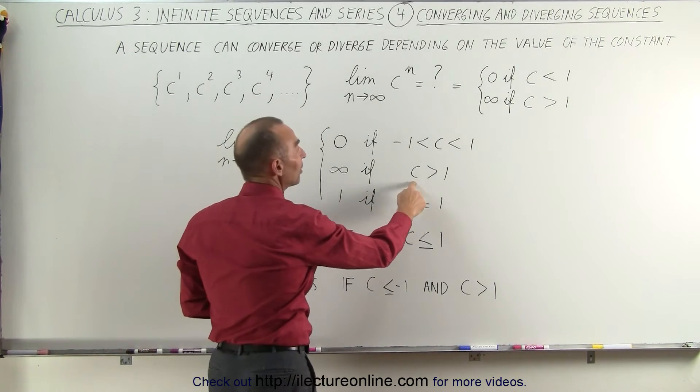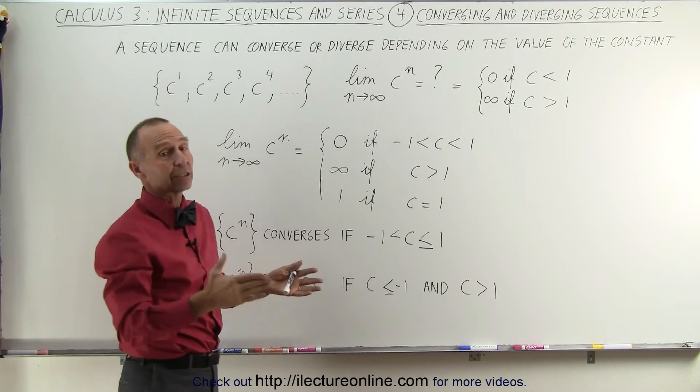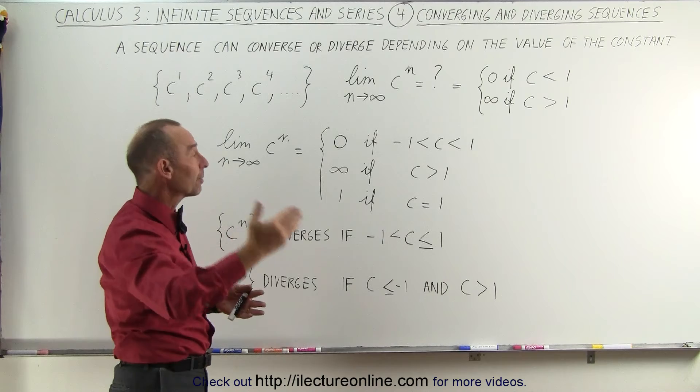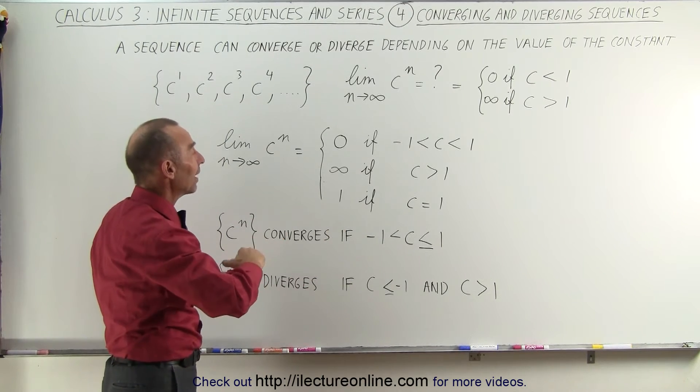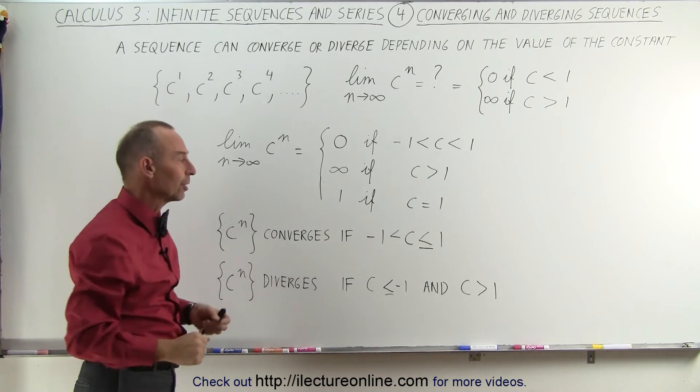But if c is greater than 1 or even if c is less than negative 1, it will not converge because then the value will ping-pong back and forth between a positive and negative value, and those negative values and positive values will become larger and larger in magnitude.